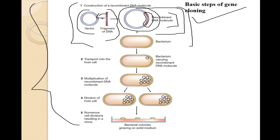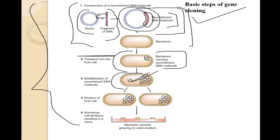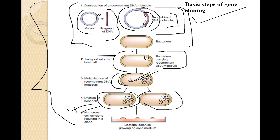After forming the recombinant DNA molecule, we transport it into the host cell. Multiplication then occurs inside the host cell, followed by division of the host cells into two identical cells, each containing the recombinant DNA molecules. Finally, we identify or select the recombinant DNA molecules using antibiotics or the presence of a selectable marker.